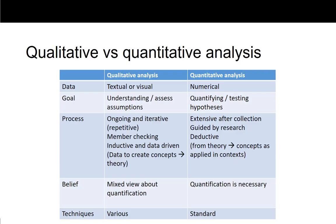The goal in the analysis is very different. In qualitative we're looking to understand or assess our assumptions — we often don't know what we are looking for specifically. We're often going into the qualitative data asking ourselves what is happening here. Whereas when we have quantitative data we are looking to test our hypotheses: I think this is happening, I do the analysis and I can say yes or no something is happening or not.